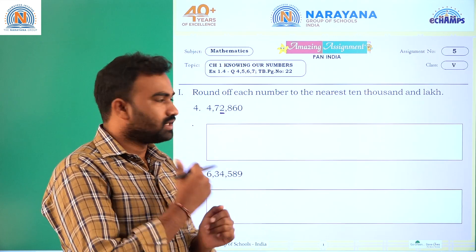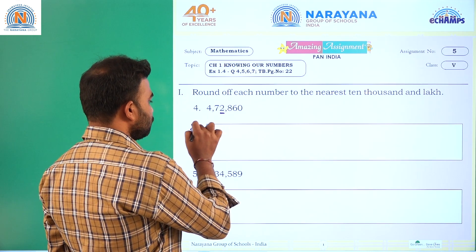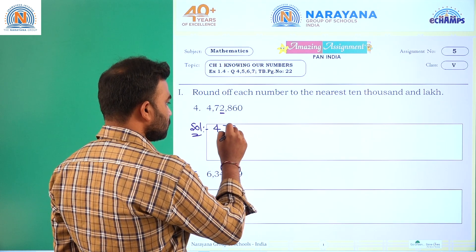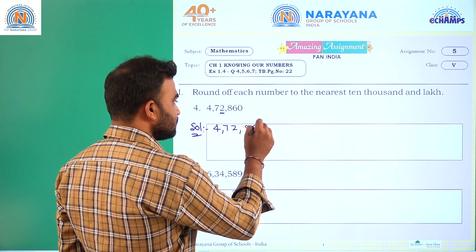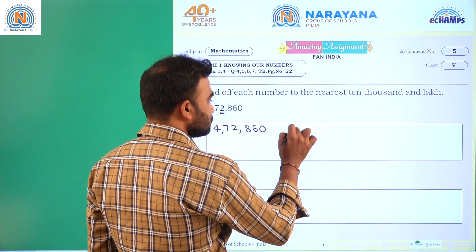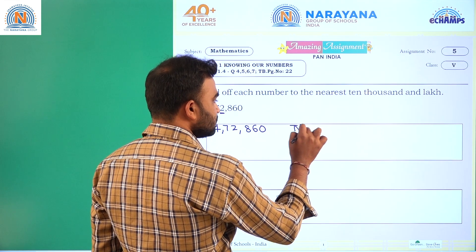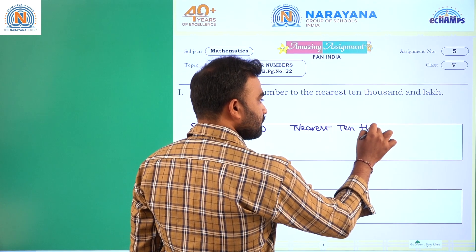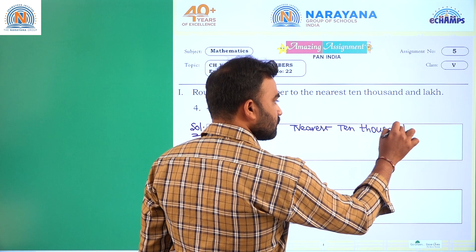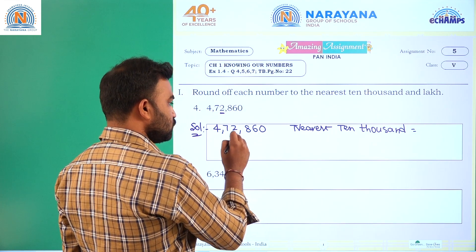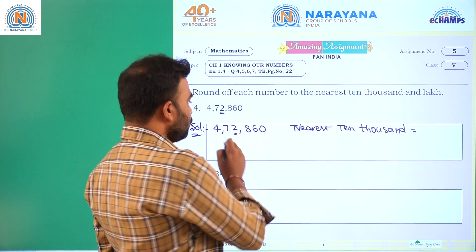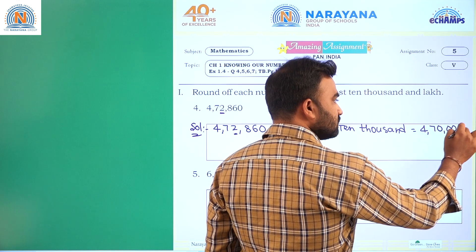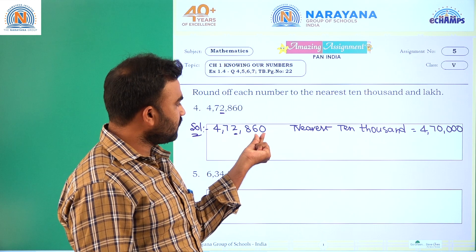Solution: the given number is four lakh seventy-two thousand eight hundred sixty. For nearest ten thousands: the thousands place is two, which is less than five, so we make it zero. The answer is four lakh seventy thousand.